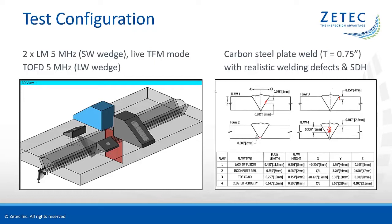The inspection is performed with live TFM from both sides of the weld and a TOFD pair in a single scanning sequence. The live TFM frames are generated from two 5 MHz 64 element linear arrays on shear wave wedges.